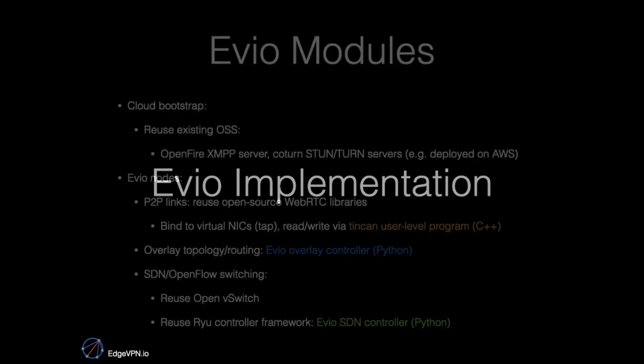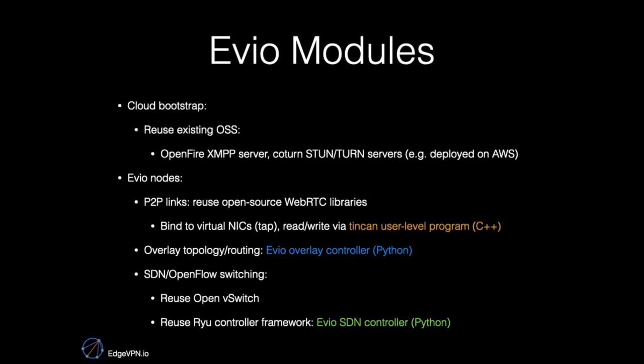Let's look at how EVO is actually implemented. EVO leverages a wealth of existing open-source software. For the cloud bootstrap, we use the OpenFire XMPP server and STUN/TURN servers such as Coturn, all deployable on a web service like AWS, Azure, or Google Cloud.